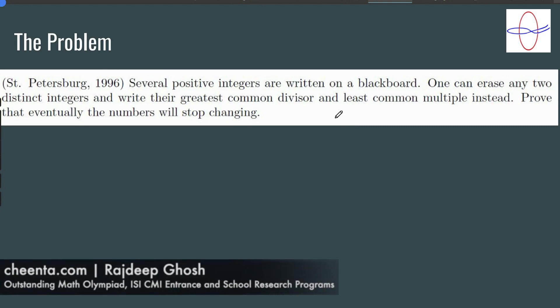So the problem that we're looking at is that several positive integers are written on a blackboard. One can erase any two distinct integers and write the greatest common divisor and least common multiple instead. Prove that eventually the numbers would stop changing.